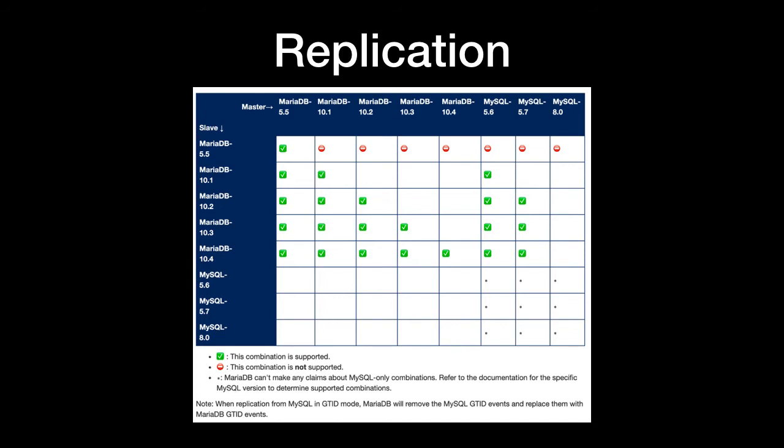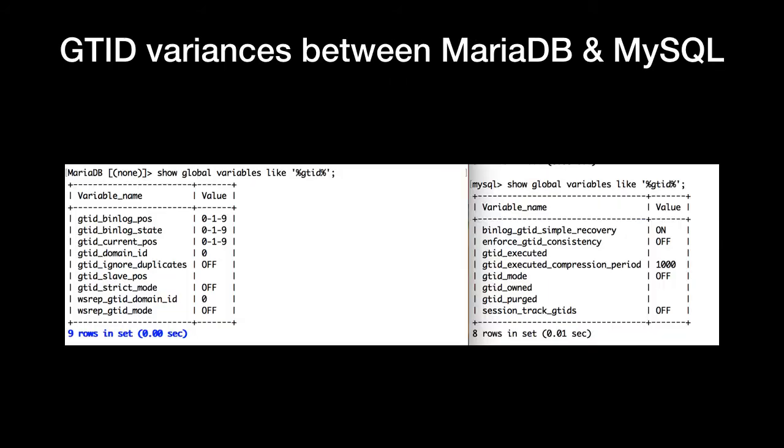When it comes to replication, it's easier to migrate to MariaDB Server, but much harder to migrate away from it — you can consider it kind of like Hotel California: check out any time you like, but you can never leave. There are GTID variances, and when MariaDB is attached as a slave to MySQL, it will just discard the GTIDs and create its own.